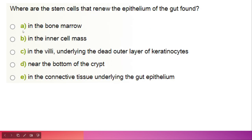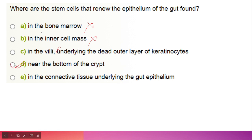Where are the stem cells that renew the epithelium of the gut found? Options include the bone marrow, the inner cell mass, and the villus. The correct option is: near the bottom of the crypt.